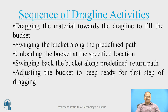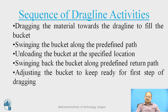The sequence of drag line activities consists of: dragging the material towards the drag line to fill the bucket, swinging the bucket along a predefined path, unloading the bucket at a specified location, swinging back the bucket along the predefined return path, and adjusting the bucket to get ready for the first step of dragging again. This is a cyclic operation and therefore once completed, it reaches back to the starting step, continuing in cyclic form.